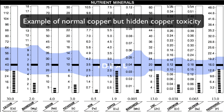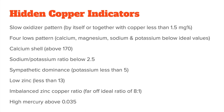To check for hidden copper toxicity on a hair test, you want to look for the following: a slow oxidizer pattern by itself or together with low copper; a four lows pattern, meaning calcium, magnesium, sodium, and potassium are below their ideal values; a calcium shell, meaning the calcium value is above 170; a sodium-to-potassium ratio below 2.5; a sympathetic dominance pattern, meaning potassium is less than 5; low zinc less than 13; an imbalanced zinc-copper ratio far from the ideal 8-to-1; or high mercury above 0.035.